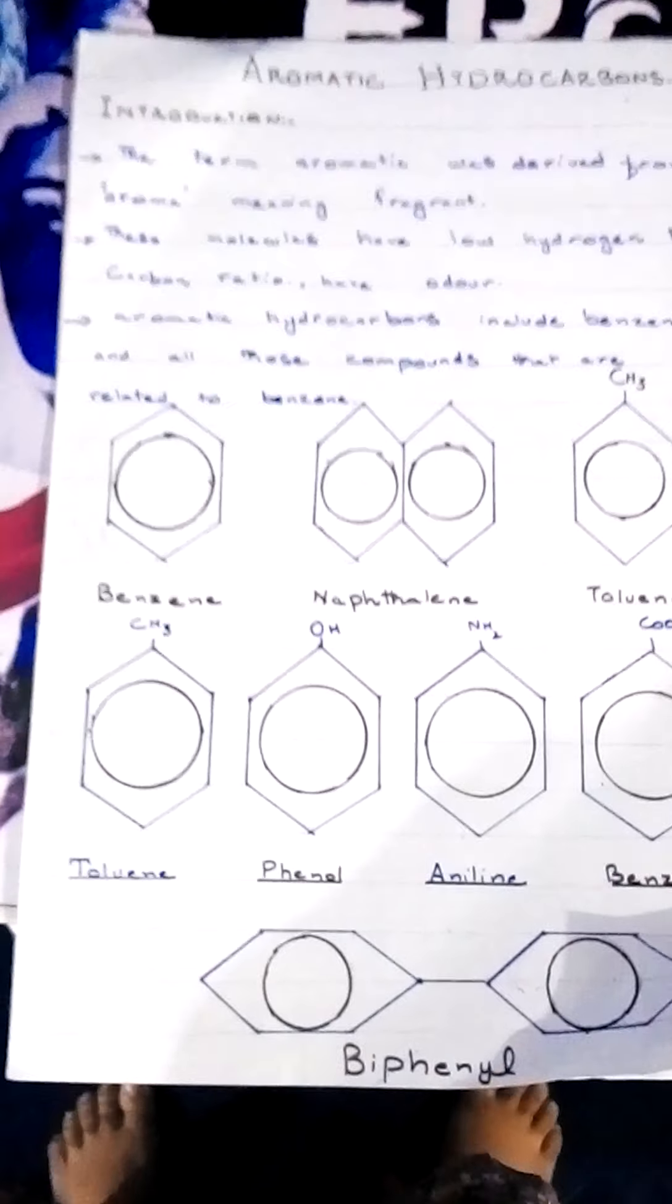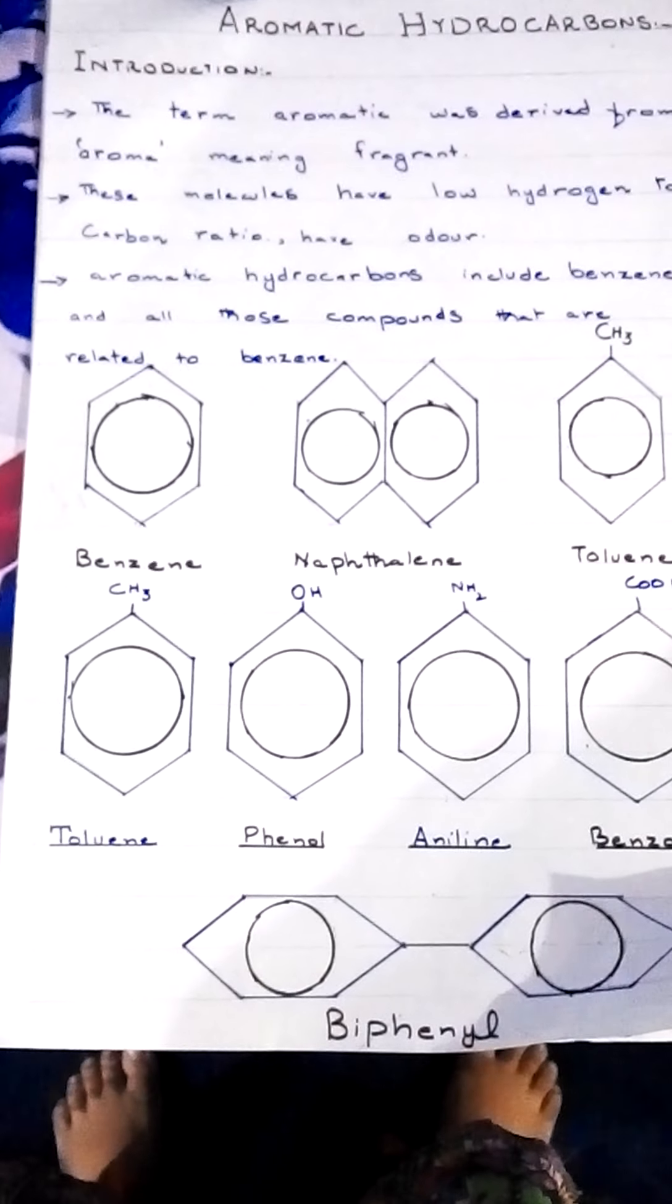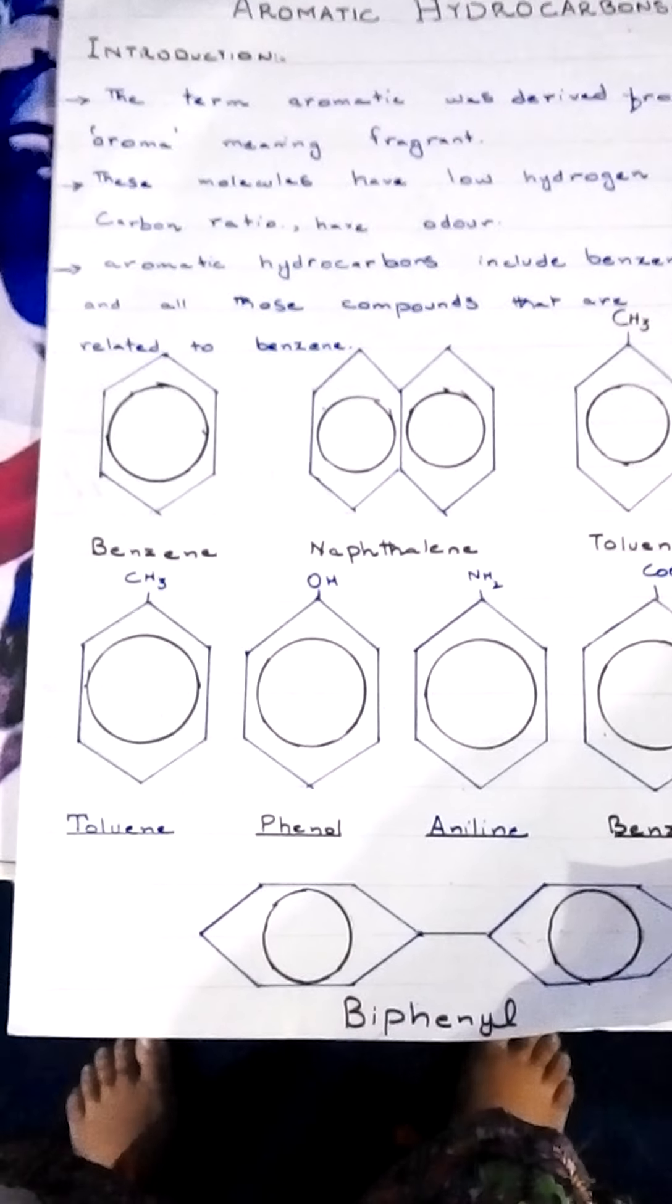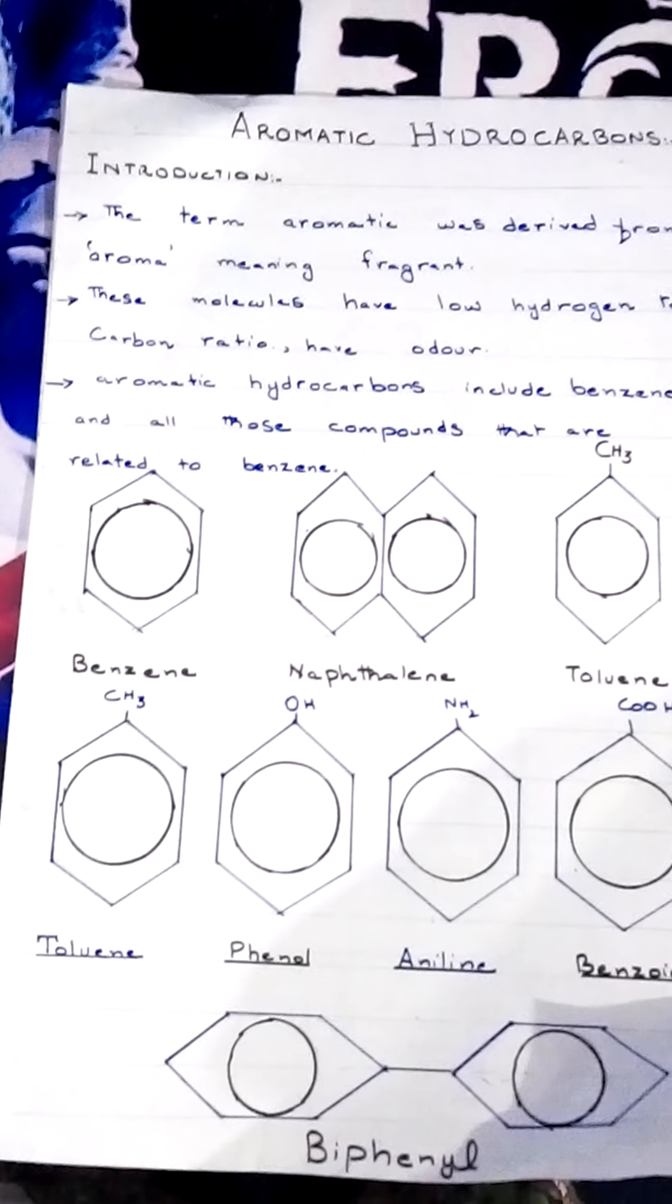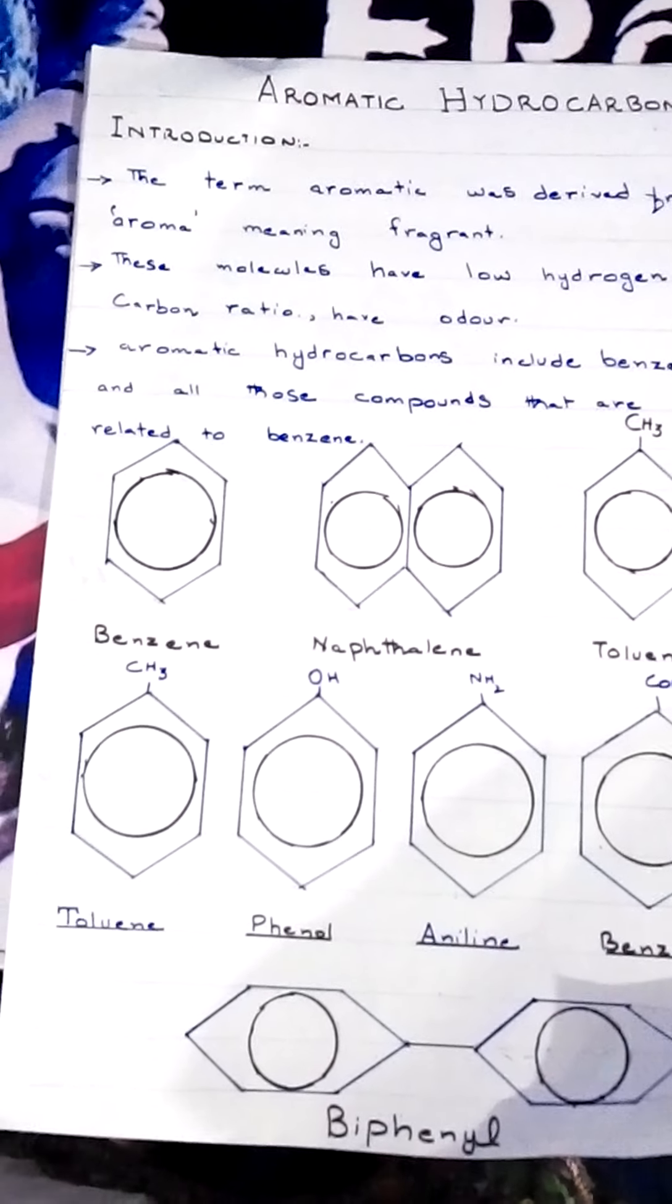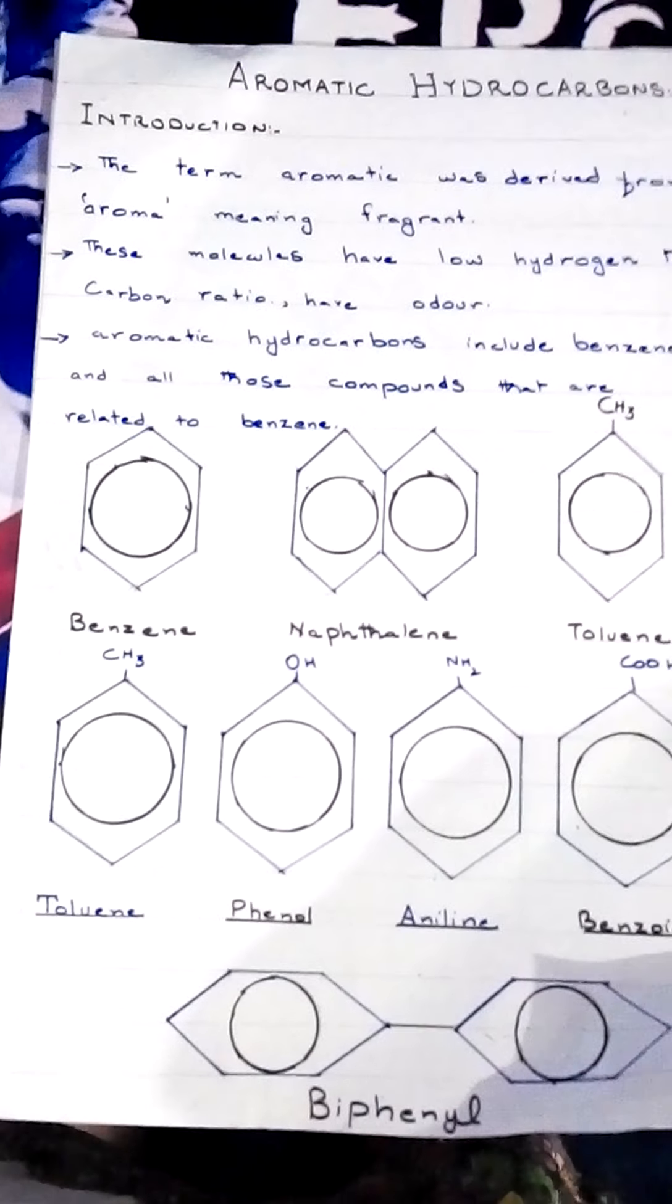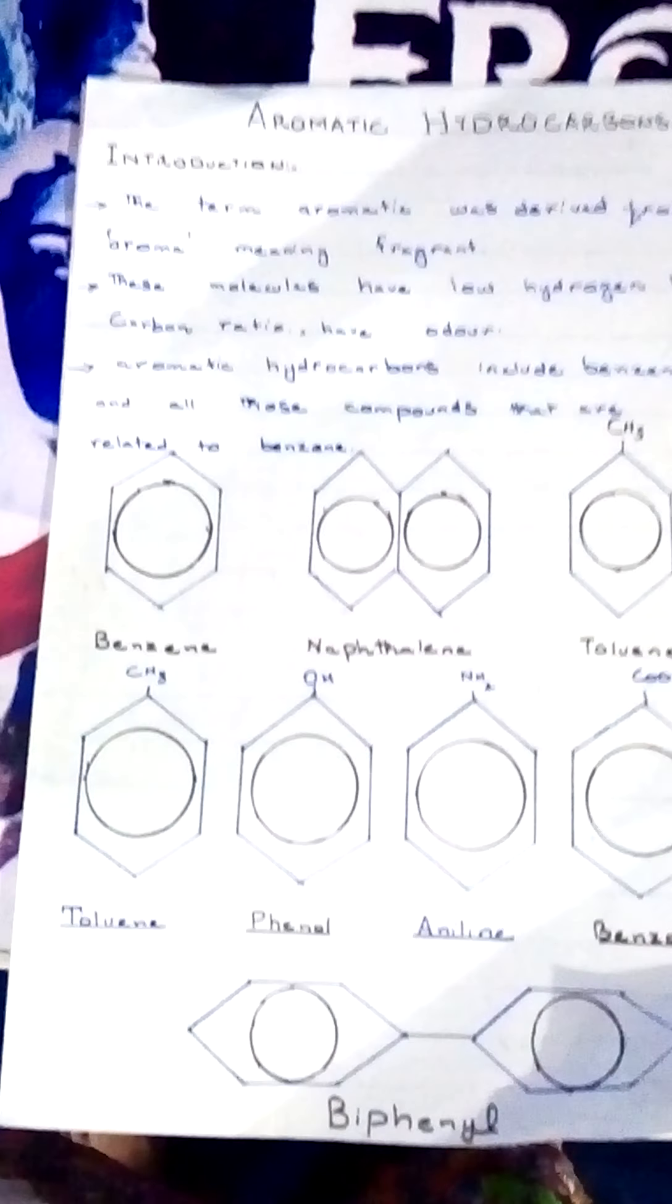Here is a small introduction about hydrocarbons. The term aromatic was derived from the Greek word aroma, meaning fragrant, and was used in organic chemistry for a special class of compounds. These compounds have a low hydrogen to carbon ratio in their molecular formula and have a characteristic odor. However, it was soon realized that many aromatic compounds are odorless.